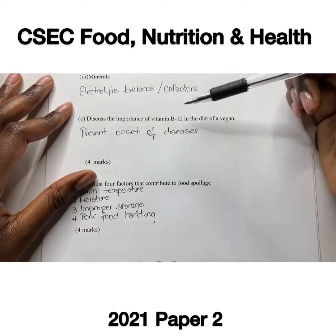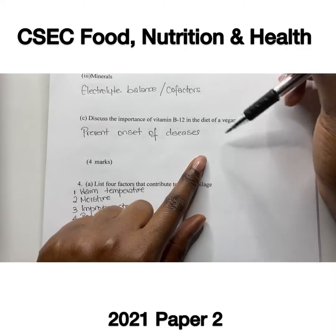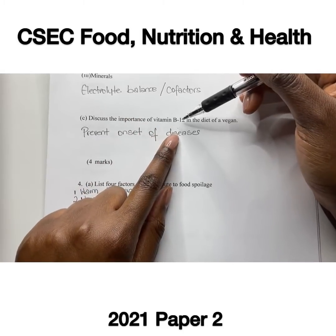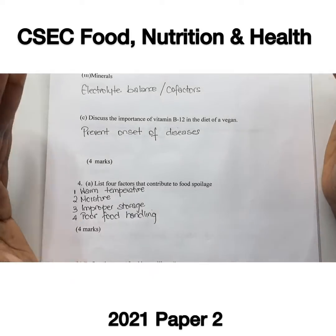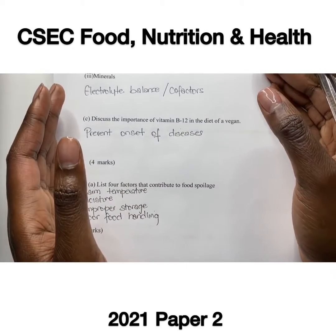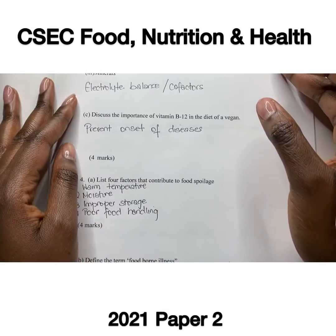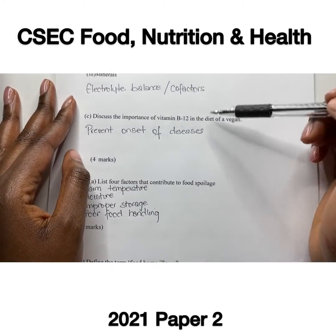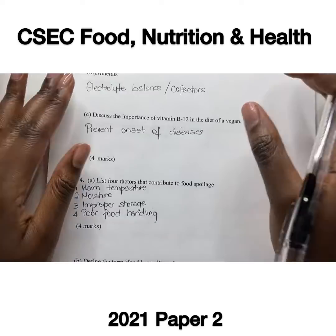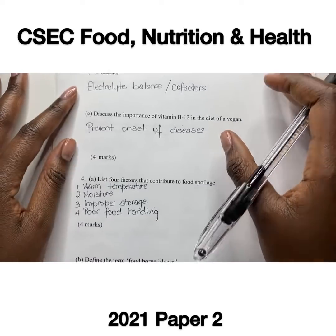Part C asks to discuss the importance of vitamin B12 in the diet of a vegan. A vegan does not consume food from animals, and vitamin B12's main source is from animal foods. Vitamin B12 is important for the manufacture of red blood cells, nerve function, and processes like synthesizing new DNA and RNA. If a vegan does not supplement vitamin B12, they will be prone to diseases like anemia and nervous tissue damage.